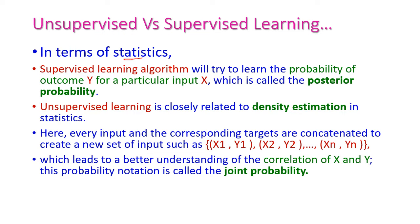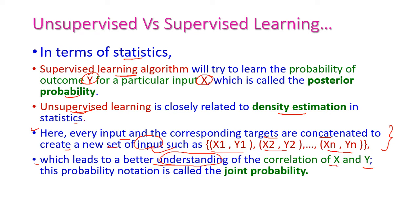In terms of statistics, in supervised learning, we try to learn the probability of outcome y for a particular input x — that is, the posterior probability. Every input and the corresponding targets are concatenated to create a new set of inputs: x1, y1; x2, y2; up to xn, yn. This leads to better understanding of the correlation of x and y, and this probability is called joint probability. So in supervised learning, the posterior probability is used, while in unsupervised learning, the joint probability is used.